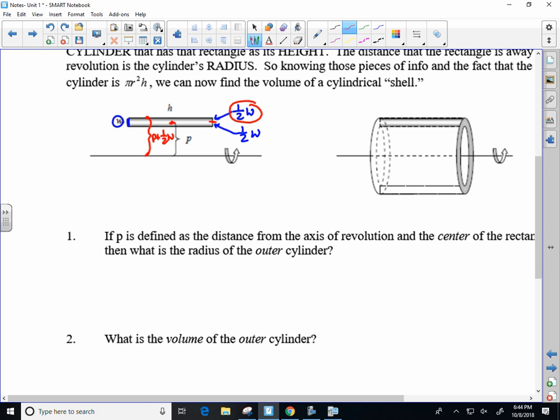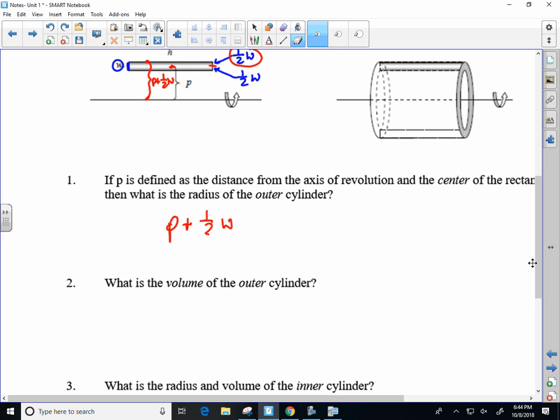What they're asking us for in number one is just the radius of the outer cylinder, so p plus one-half W. Then they ask us what the volume is of the outer cylinder, so basically I'm saying that instead of taking the entire rectangle and spinning it around, I'm only spinning around the top line. So I don't even have a cylinder with any kind of real thickness.